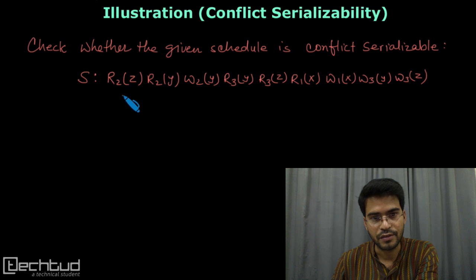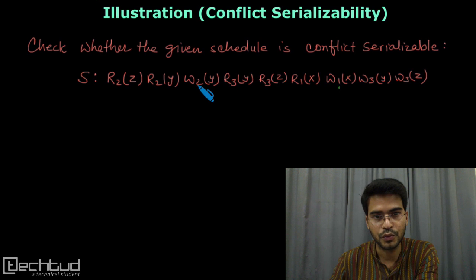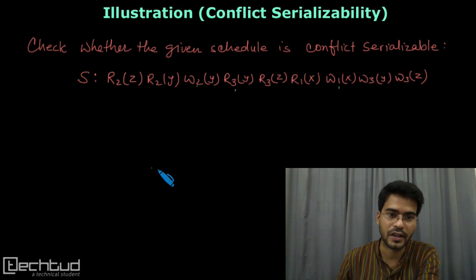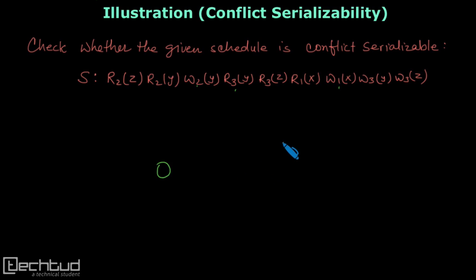We can see that we have three transactions: one, two, and three. So we will take three nodes. We will keep them spread out so that we can construct edges in between. This is node one, this is two, and this is three.